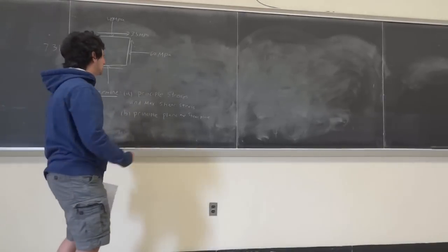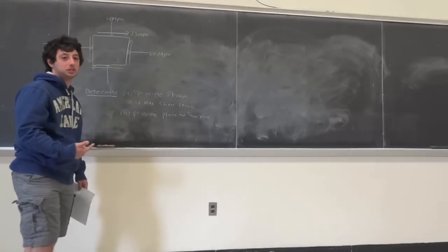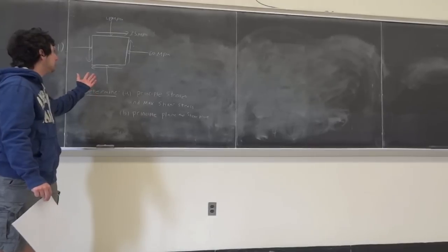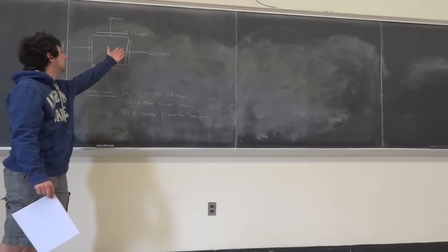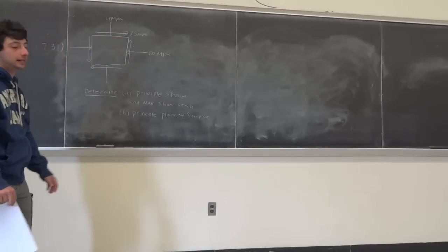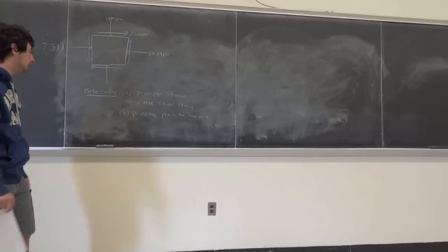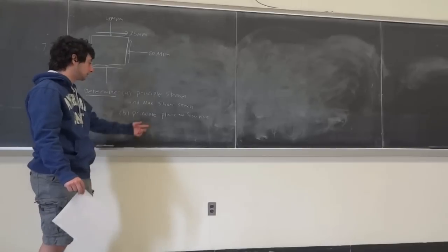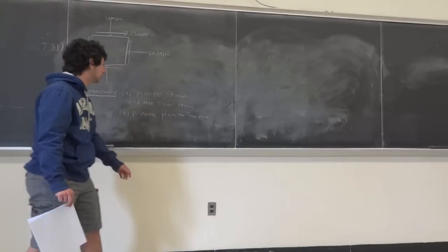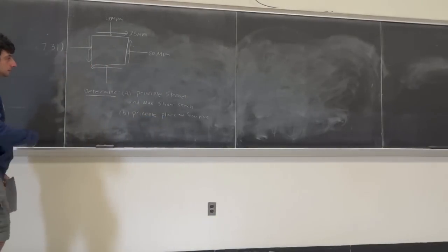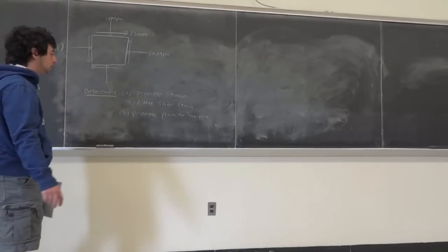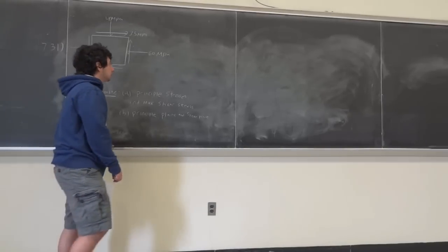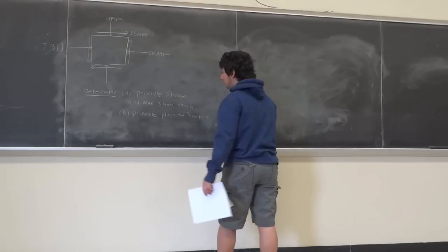This is a Mohr's circle problem. Chapter 7 is all Mohr's circle. They give you a 2D state of stress — sigma x, sigma y, and tau xy — and ask you to find the principal stresses, the maximum shear stress, and also the principal planes of the shear plane. We're going to have to draw a Mohr's circle determined by just algebra and trig.